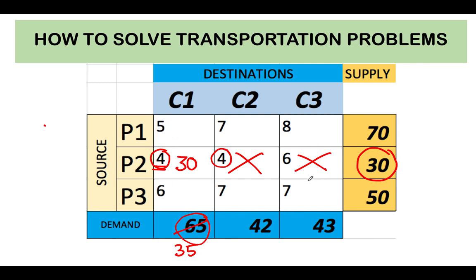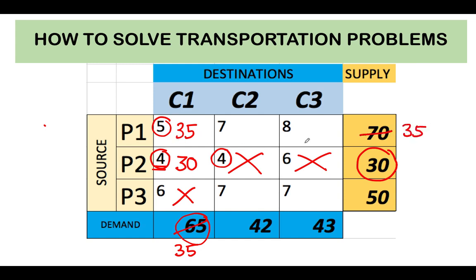For the next step, we inspect the costs again and look for the cell with the least cost. Among the remaining cells, 5 is the lowest. We look at the remaining demand of 35 and supply of 70 — the lowest is 35 — so we allocate the entire 35 from P1 to C1. Customer C1's demand is now fully met. Since we used 35 from P1's supply of 70, there is still a balance of 35 remaining from P1.